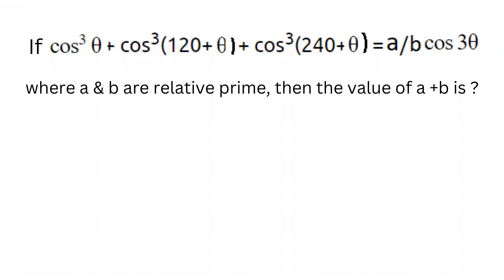The question says: if cos³θ + cos³(120+θ) + cos³(240+θ) is equal to (a/b)cos3θ, where a and b are relatively prime, then what is the value of a plus b?